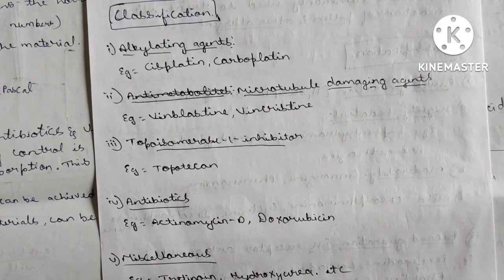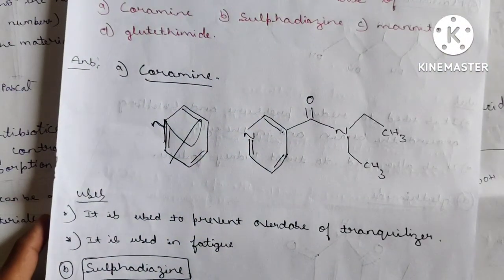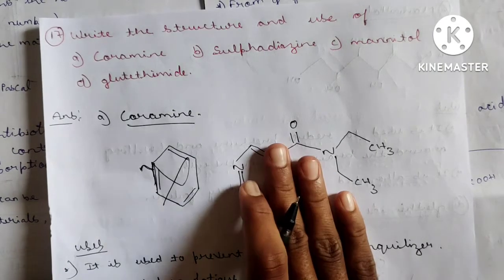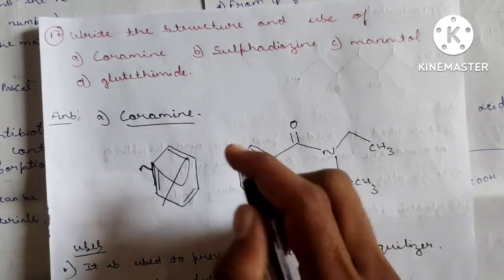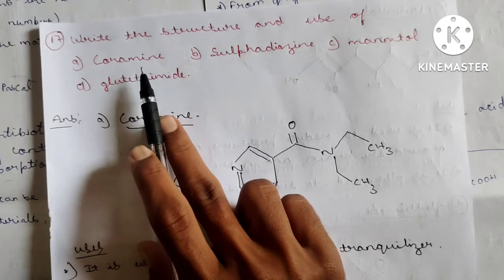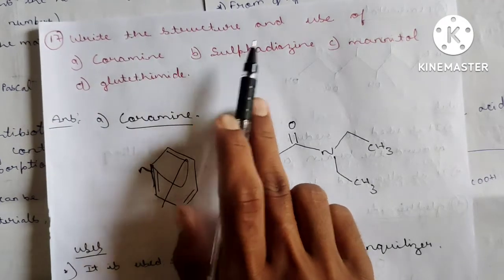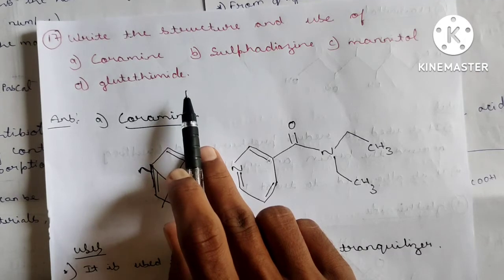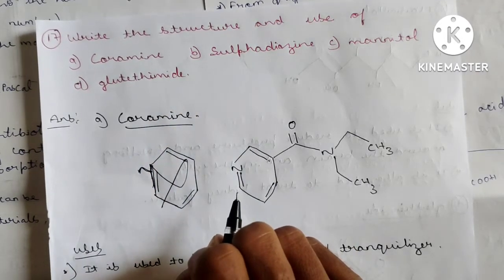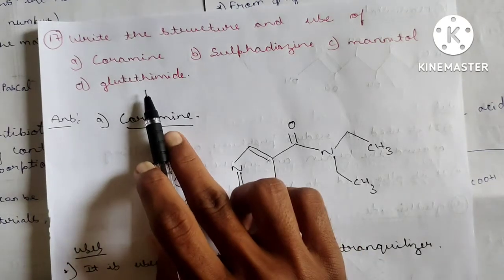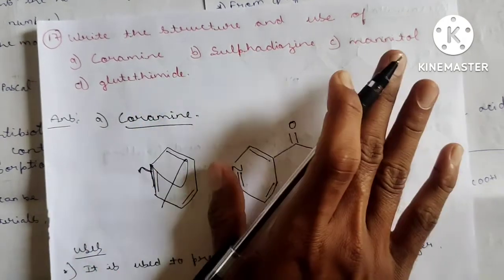Question 17 covers structures and uses — very important for your examination. Sometimes they will ask 'write the structure and use of coramine', or alter the question to 'write a note on sulfadiazine, mannitol, or glutethimide.' In that case, first write what the drug is, then write the structure and uses — that is enough.